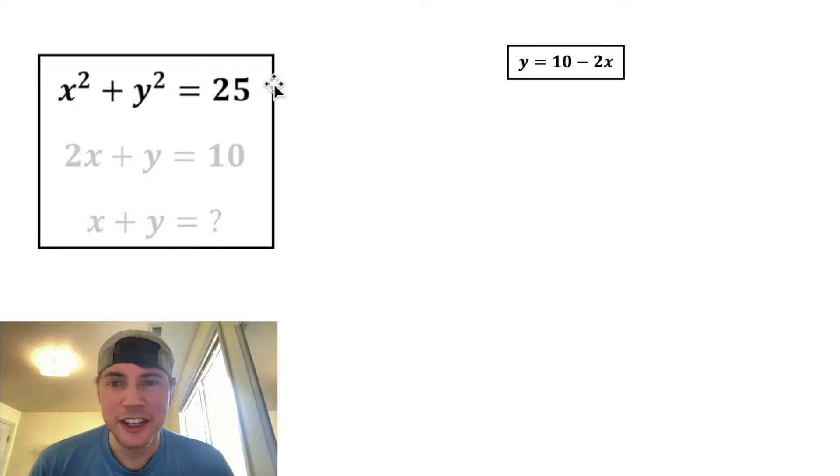Next, let's focus on the x squared plus y squared equals 25. Let's bring it down, and in the place of this y right here, I want to plug in 10 minus 2x. So now this is 10 minus 2x being squared, so we're gonna multiply 10 minus 2x times 10 minus 2x.